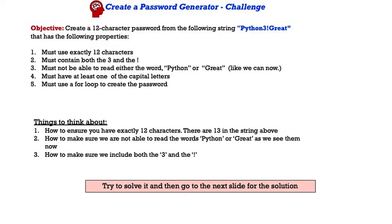And here is our challenge for this module. We want to create a password generator. The objective, create a 12-character password from the following string, python 3, exclamation, great. And it has to have the following properties. It must be exactly 12 characters, no more, no less. It must contain both the 3 and the exclamation point. It must not, we must not be able to read either the word python or great when you generate your password like we can now. It must have at least one capital letter, and it must use a for loop to get this done.